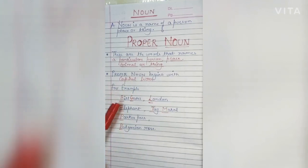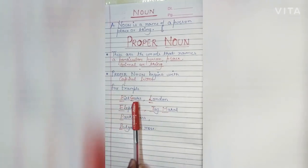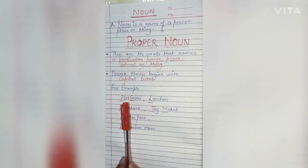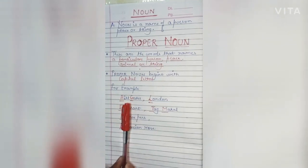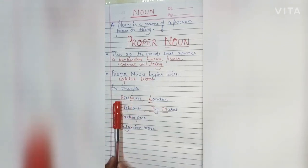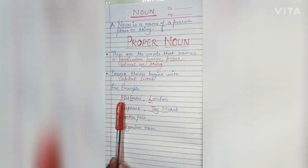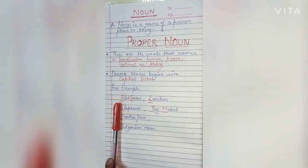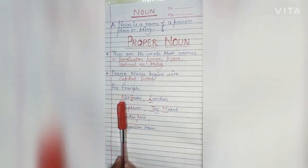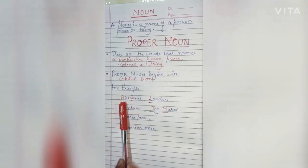Let us take some examples to understand it better. The first example is Bill Gates. Bill Gates is one of the richest persons in the world and also the founder of Microsoft. It is a specific, particular name, and that is why it is written with a capital letter — B in Bill and G in Gates — while the rest of the words are small.